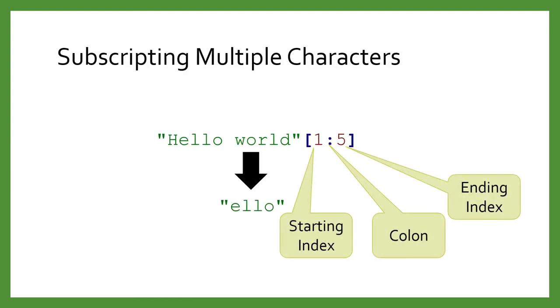It wouldn't be too useful to only grab out one character at a time, so you can actually grab out more than one by using the subscript range syntax. Inside the square brackets, you put a pair of numbers separated by a colon. The first number is the starting index, and the second number is the closing index.